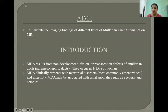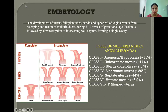They occur in 1–15% of women. Clinically, Mullerian duct anomalies present with menstrual disorders and infertility. They may also be associated with renal anomalies such as agenesis and ectopia.